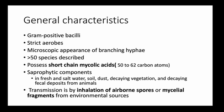Nocardia are gram-positive bacilli that are strict aerobes with a microscopic appearance of branching hyphae — fungal-like bacteria. They possess short-chain mycolic acids with about 50 to 62 carbon atoms, fewer than in mycobacteria. They are saprophytes found in fresh and salt water, soil, dust, decaying vegetation, and animal fecal deposits. Transmission is by inhalation of airborne spores or mycelial fragments from environmental sources.